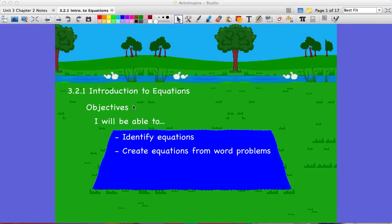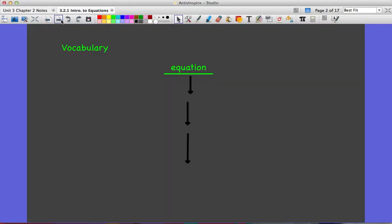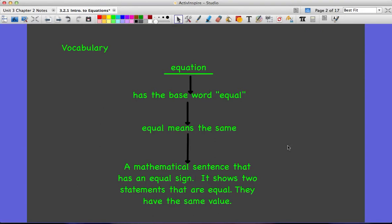Welcome to Lesson 3-2-1, Introduction to Equations. Today we're going to talk about how to identify equations and how to create equations from word problems. First we need to know what an equation is. An equation has the base word equal. Equal means the same, so what's on one side has to be the same as what's on the other side. So an equation is a mathematical sentence that has an equal sign.